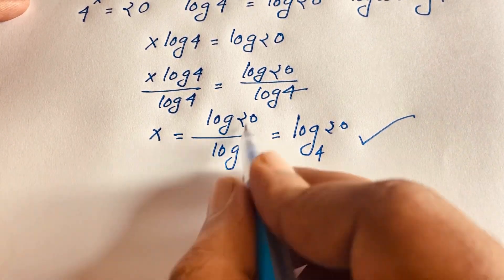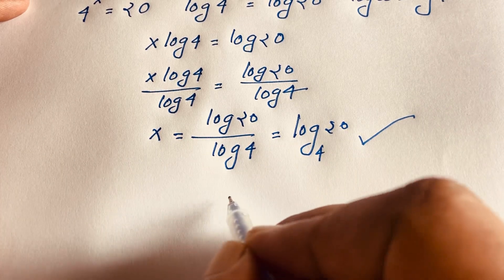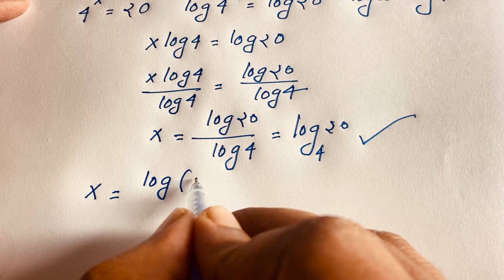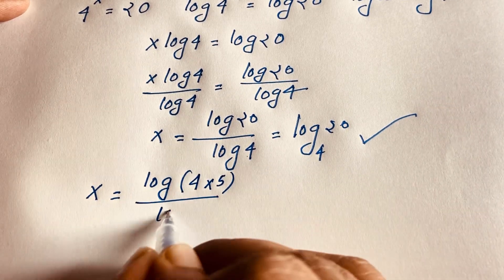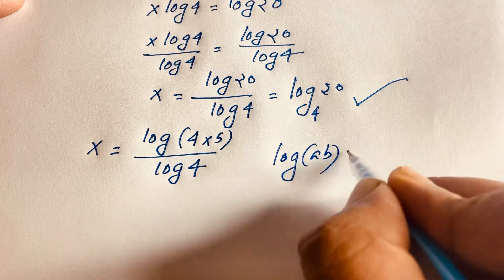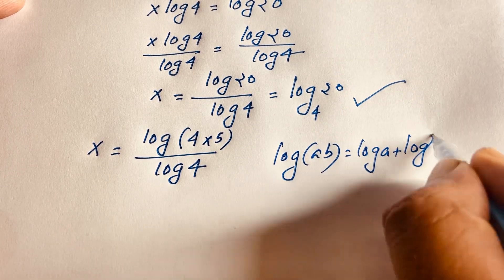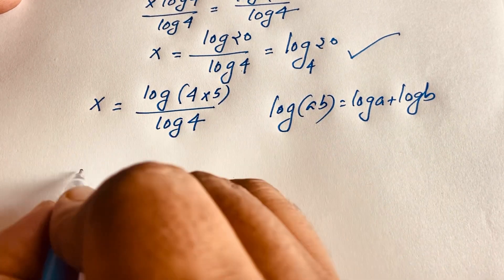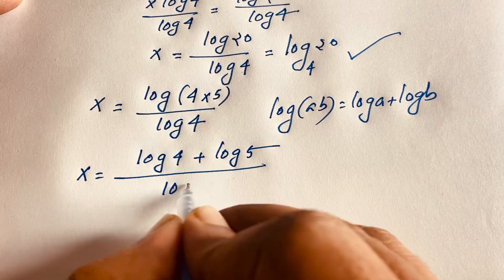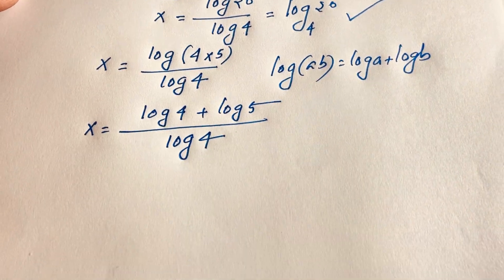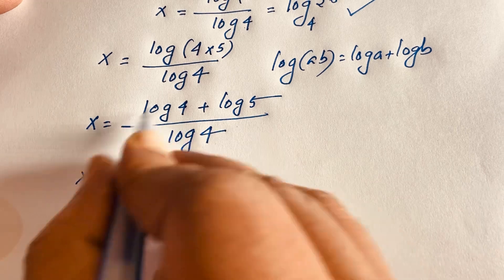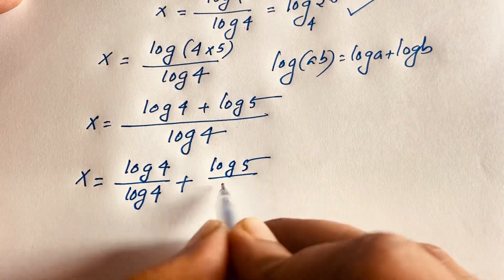Now I evaluate this further. x is equal to log 20 over log 4. Since 20 equals 4 times 5, I write log 20 as log(4 × 5) over log 4. Using the rule log(ab) = log a + log b, this becomes x is equal to log 4 plus log 5 over log 4. Splitting the fraction gives log 4 over log 4 plus log 5 over log 4.